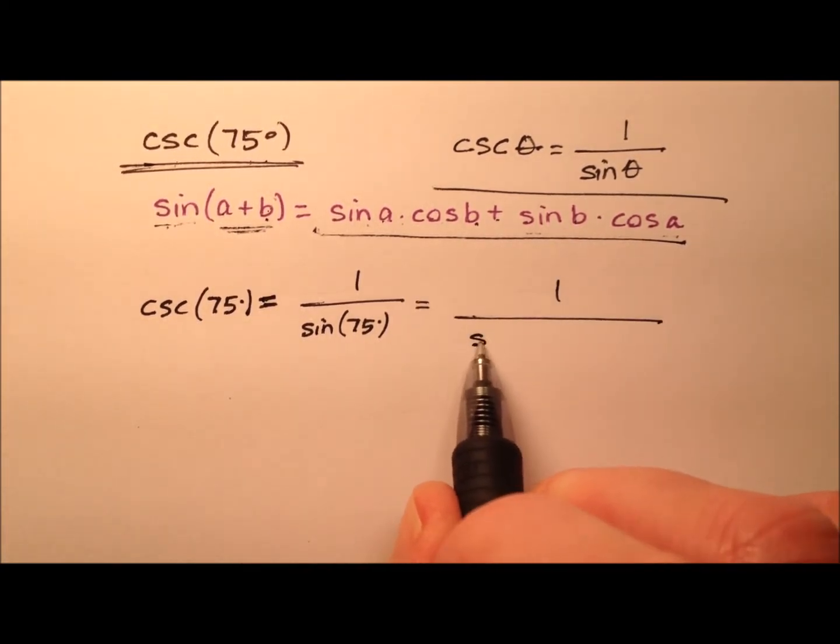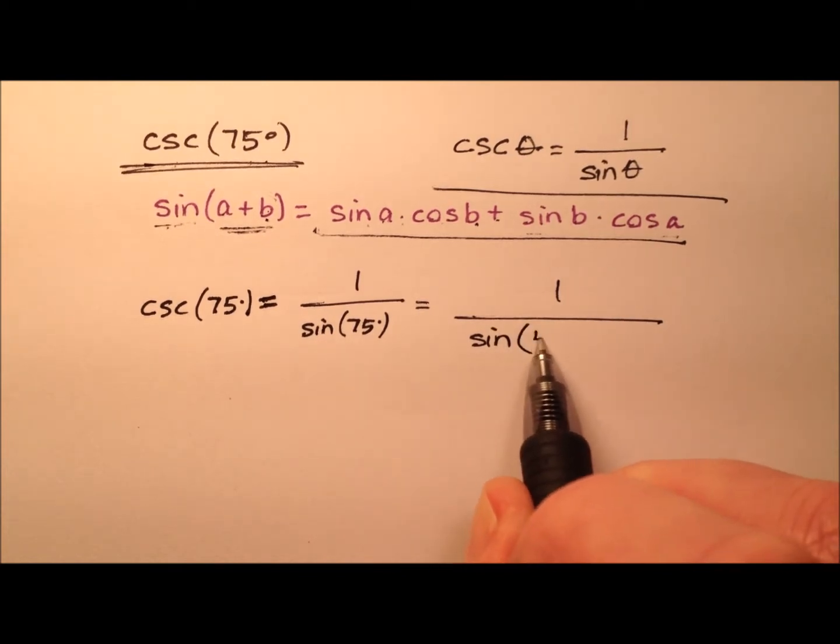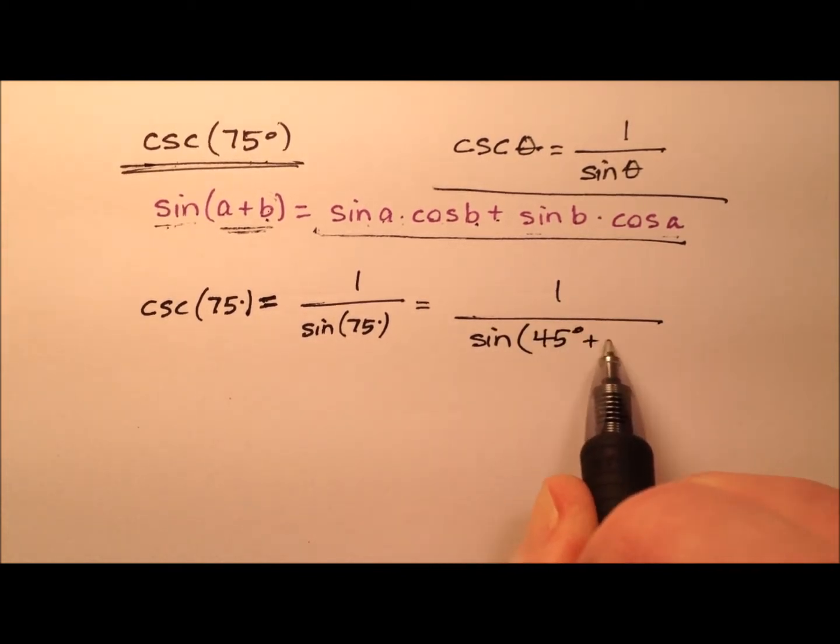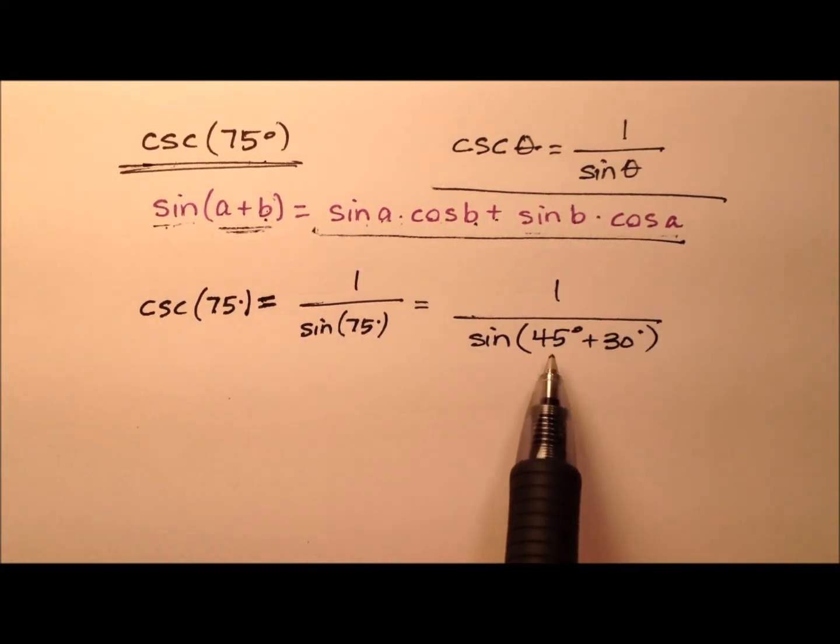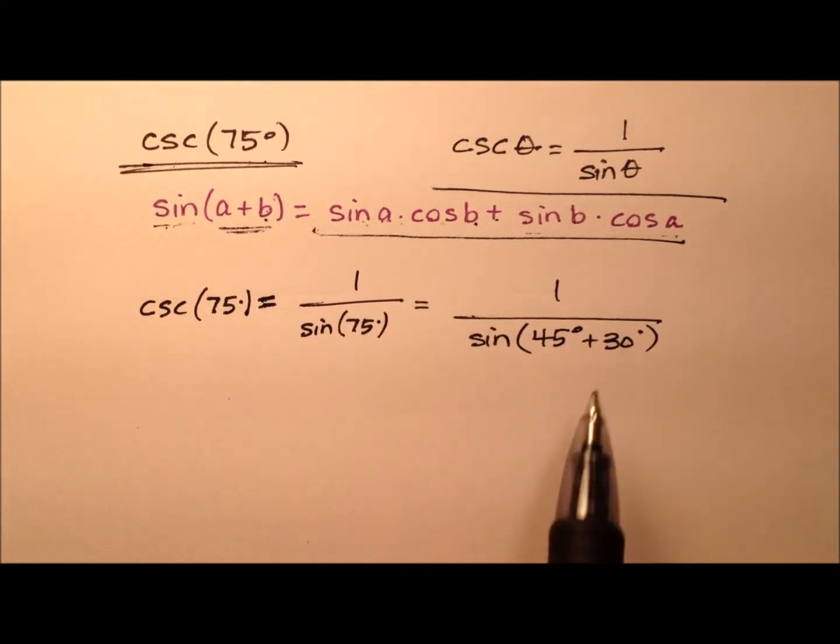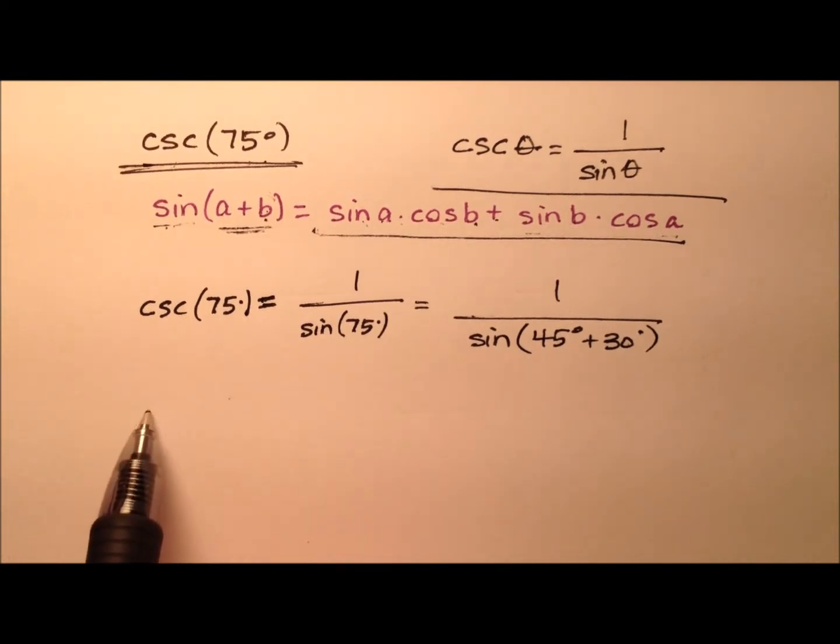Let's use maybe 45 degrees and 30 degrees. They add up to 75, and we know the sine and cosine for both 45 and 30 degrees. Let's go ahead and figure this out.